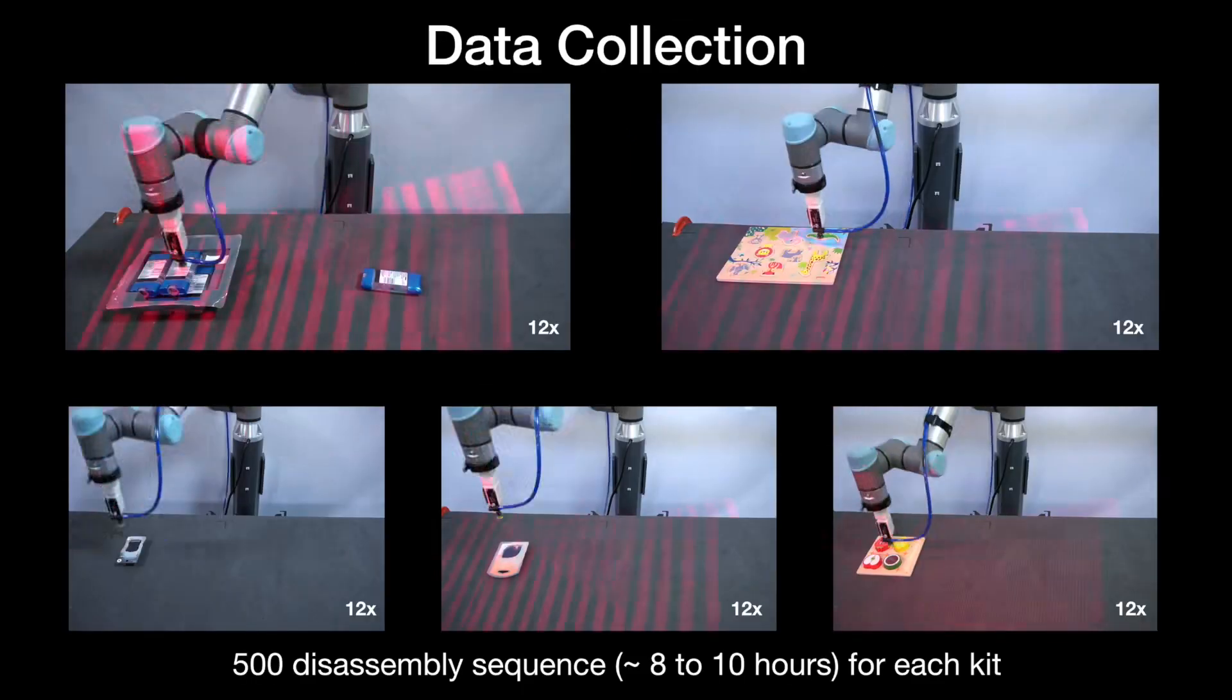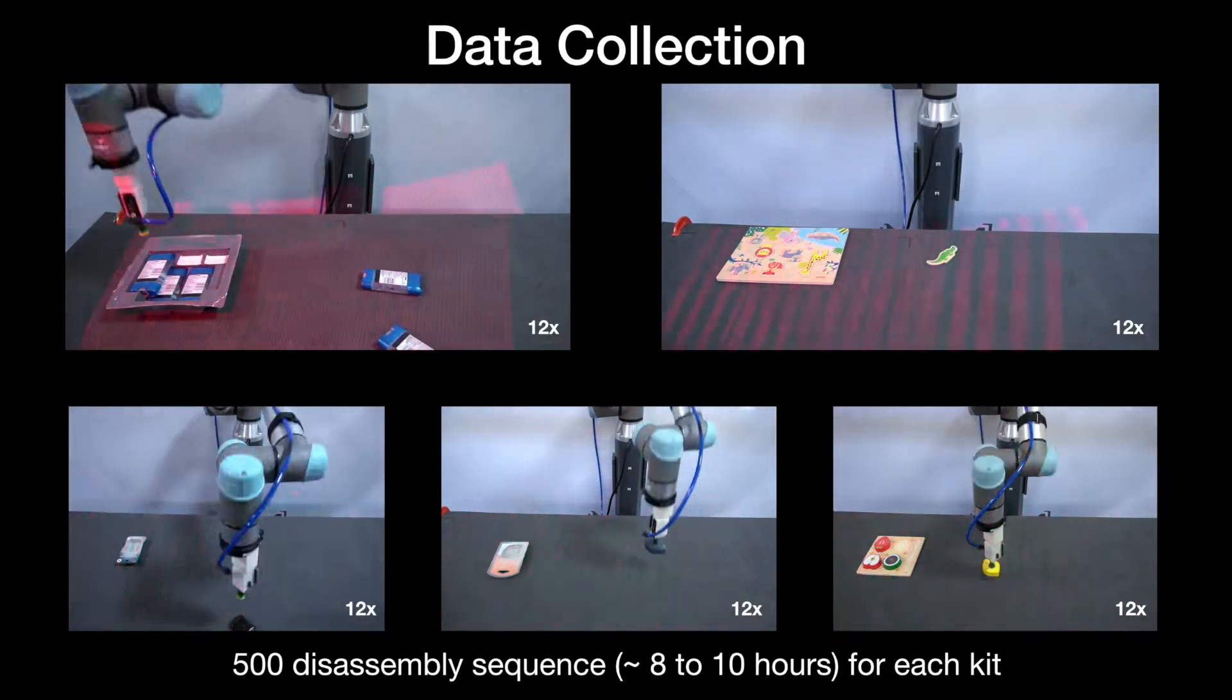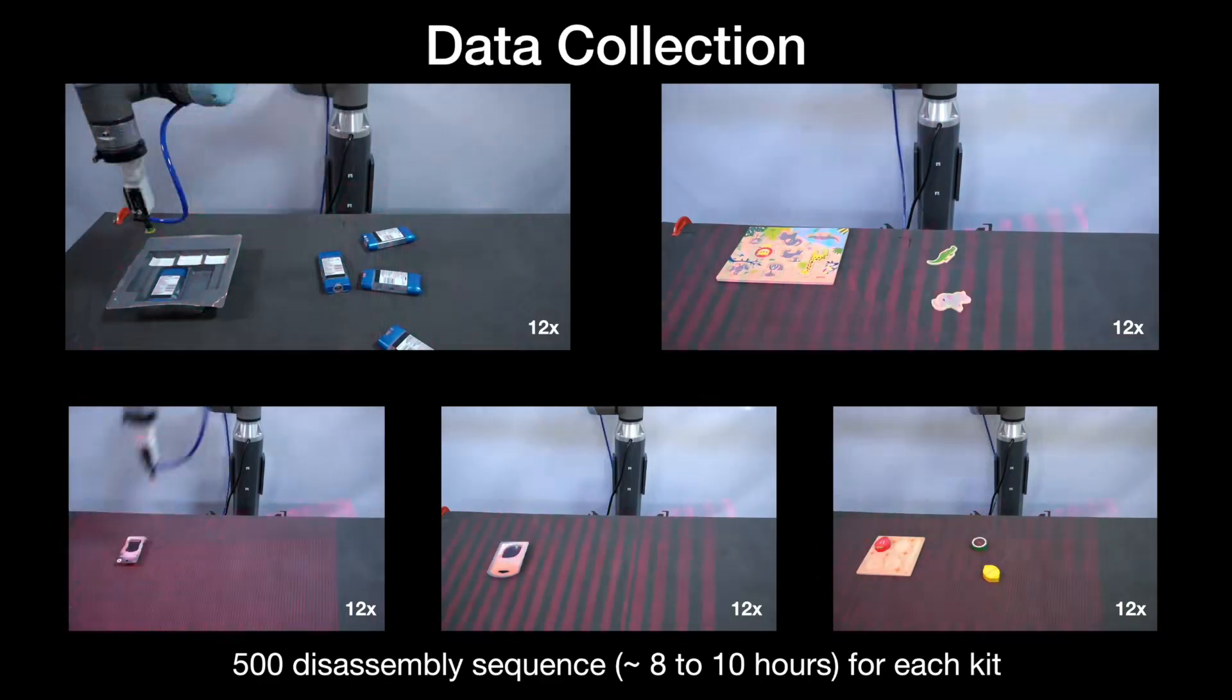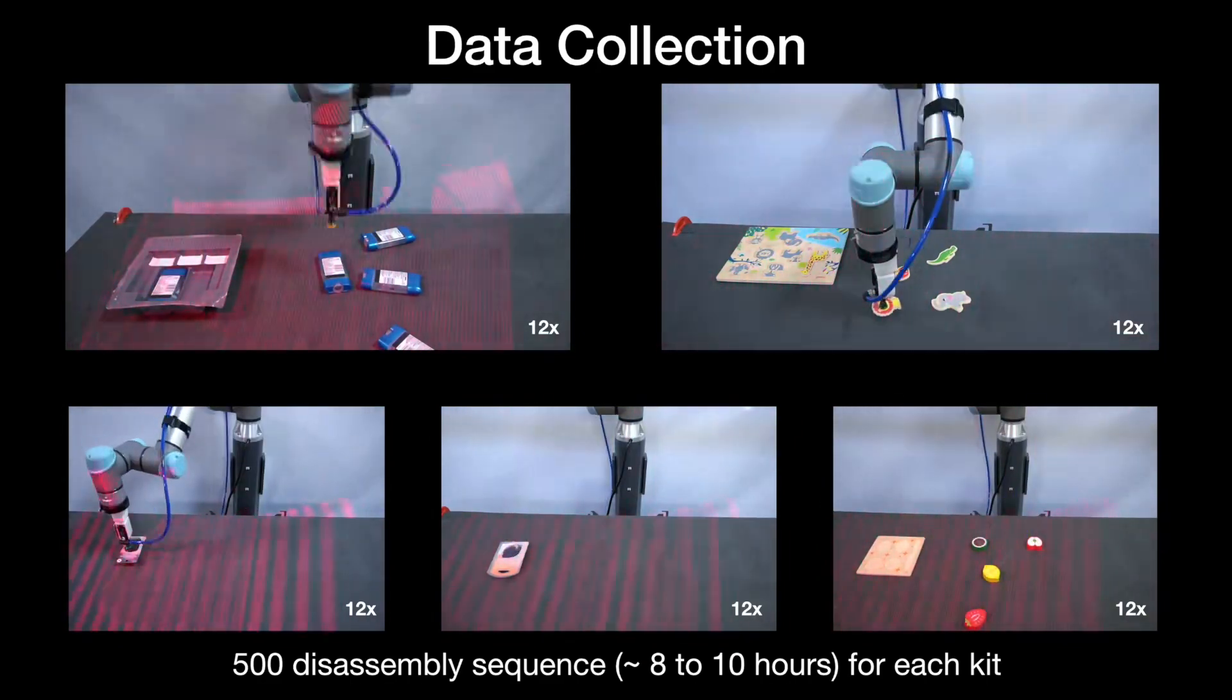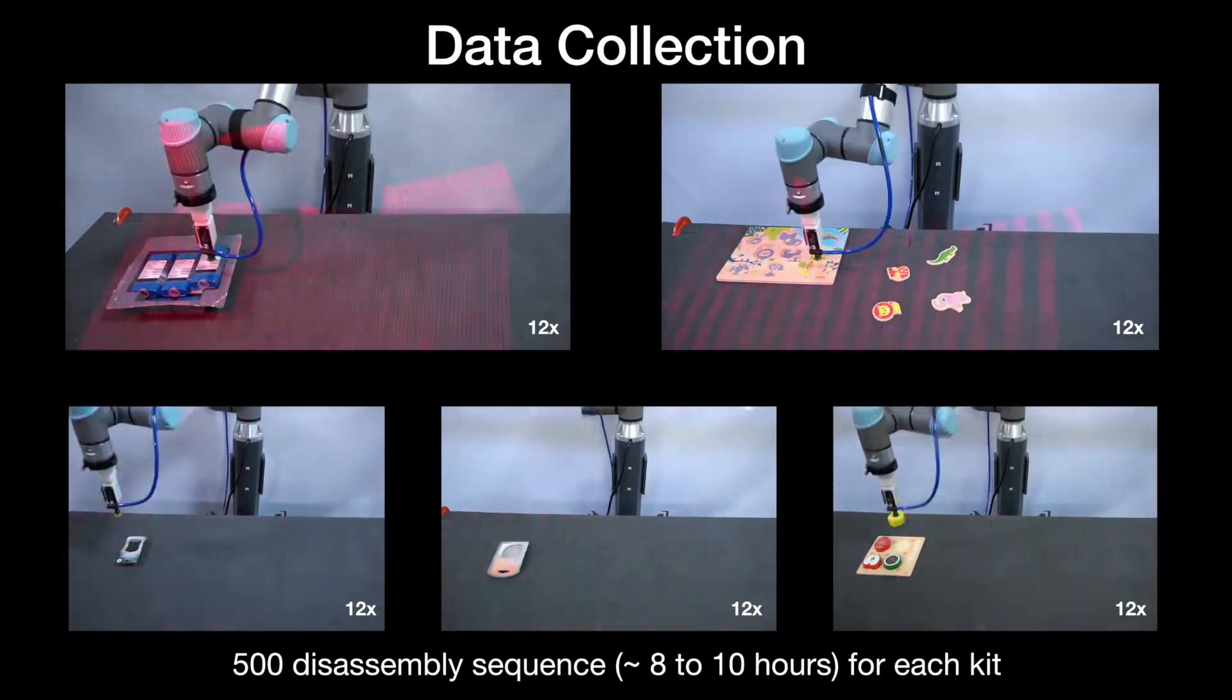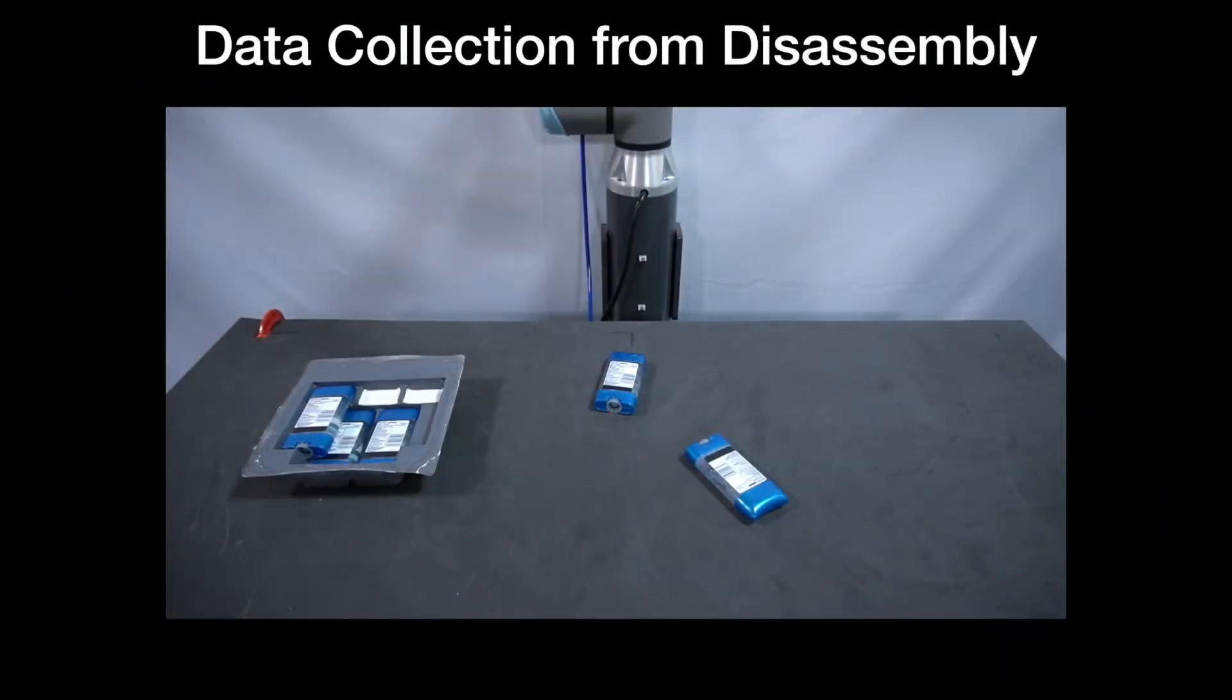To generate the inputs and ground truth labels needed to train our various networks, we create a self-resetting closed-loop system wherein the robot continuously disassembles the kit, then performs it in reverse to reset the system to its initial state.